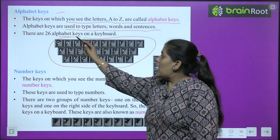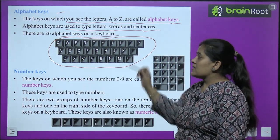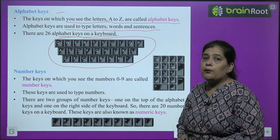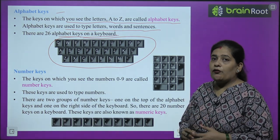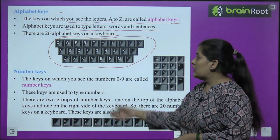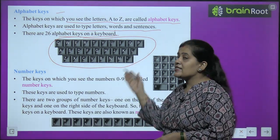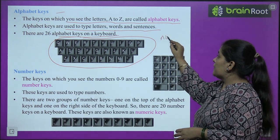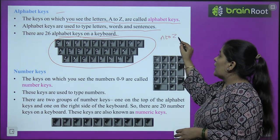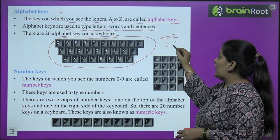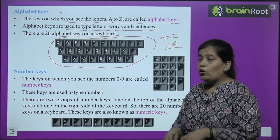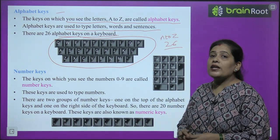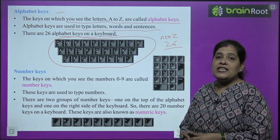There are 26 alphabet keys on the keyboard. How many alphabet keys are there? 26 — because A to Z has 26 letters. So there are 26 alphabet keys.